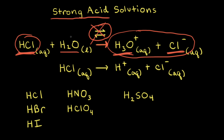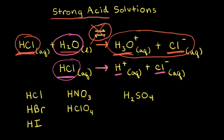It's also acceptable to completely leave water out of the equation and to show hydrochloric acid, HCl, turning into H+ and Cl-. Since HCl is a strong acid, there's only an arrow going to the right, indicating HCl ionizes 100%. And since there's only one water molecule difference between H+ and H3O+, H+ and H3O+ are used interchangeably.